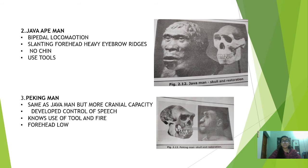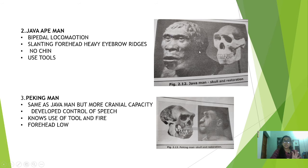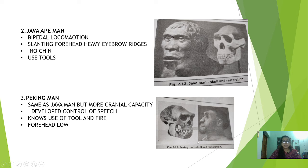Moving to the Java ape man — here major changes in man took place. They showed bipedal locomotion and started using tools for their survival, defense, and various other purposes. You can see in the image they had a slanting forehead and a heavy eyebrow ridge — thick, prominent eyebrows. You can see how man gradually started using tools by the Java ape man stage.